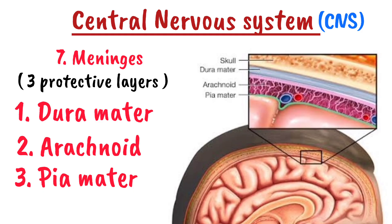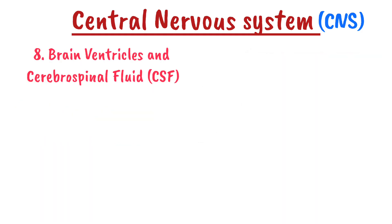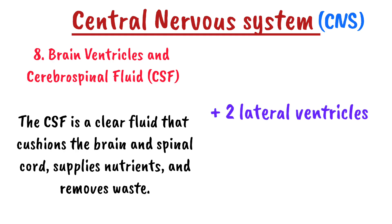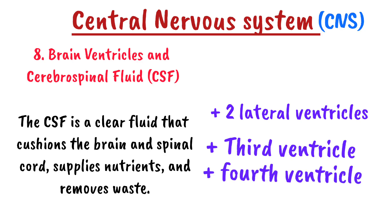Number eight is the brain ventricles and cerebrospinal fluid (CSF). The CSF is a clear fluid that cushions the brain and spinal cord, supplies nutrients, and helps remove waste. It circulates through the four brain ventricles: the two lateral ventricles, the third ventricle, and the fourth ventricle. The CSF is produced by the choroid plexus and flows through specialized openings called foramina to reach the subarachnoid space, where it is eventually absorbed into the venous system.